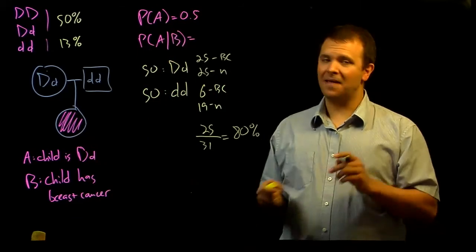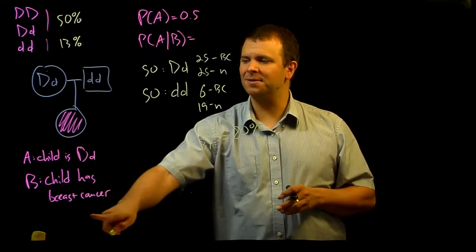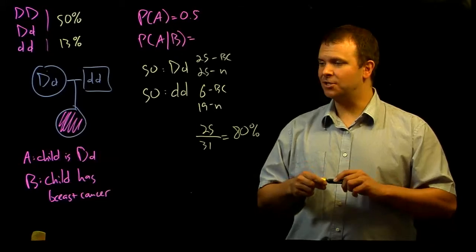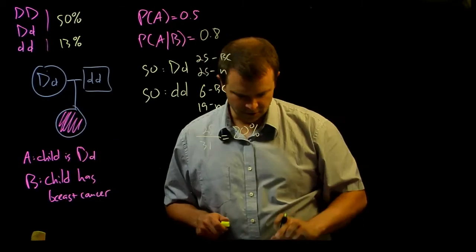And so, 25 over 31 is approximately 80%. And so, the probability of A given B, the probability that the child is a heterozygote given the fact that the child develops breast cancer eventually, is 0.8.